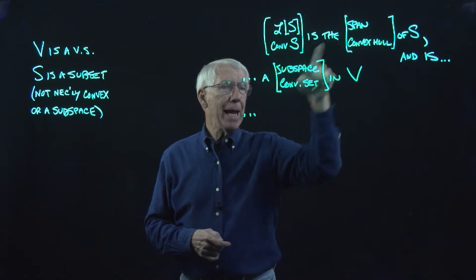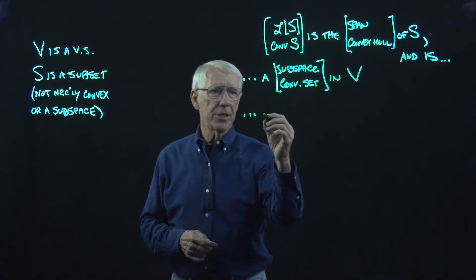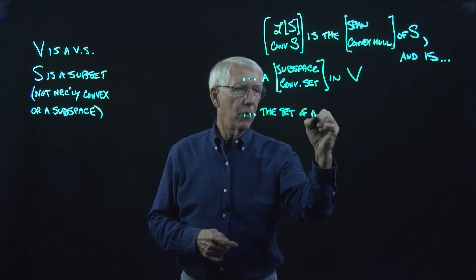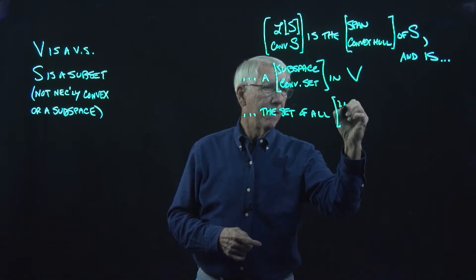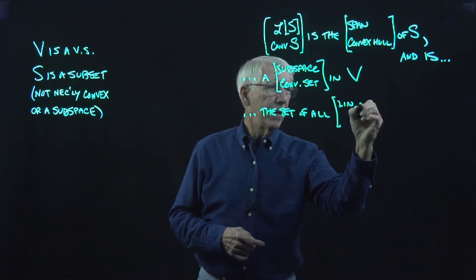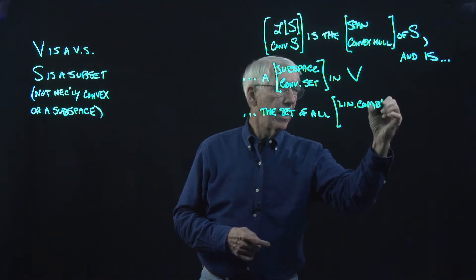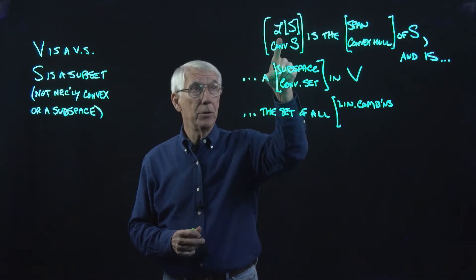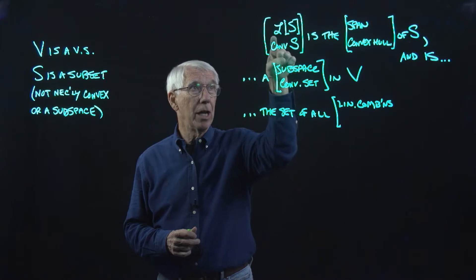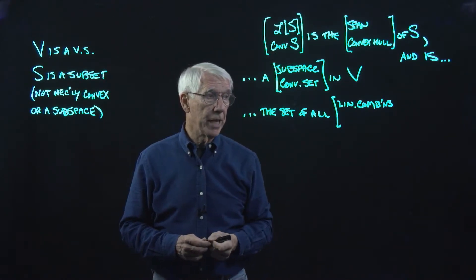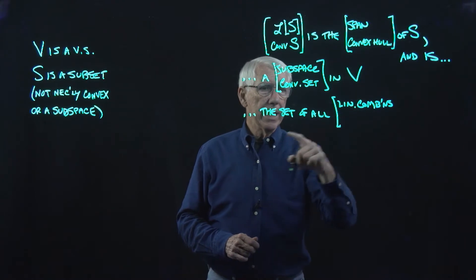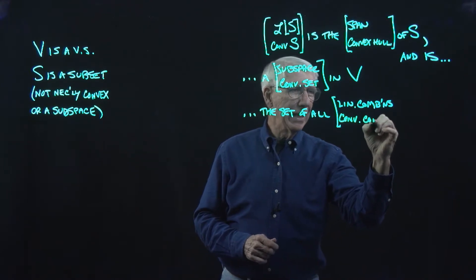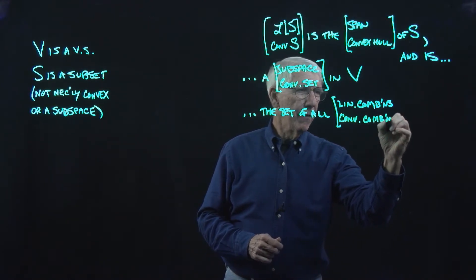The span is the set of all linear combinations of vectors in S — and in fact, that's why we use the notation L of S, because it's the set of all linear combinations of vectors in S. And the convex hull is the set of all convex combinations of vectors in the set S.